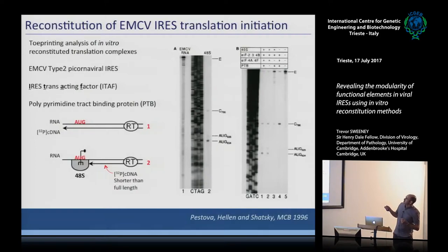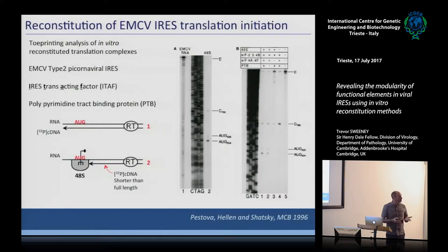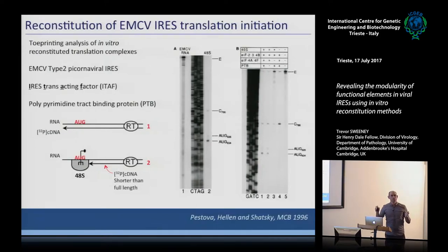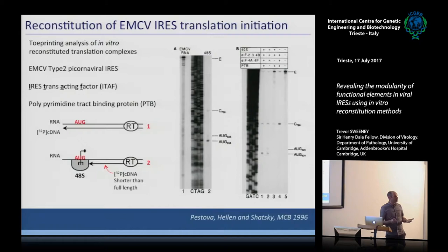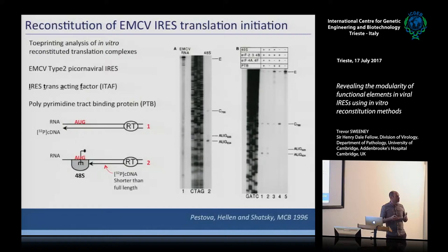When we omit EIF4F we don't see any complex, and omitting other factors also abolishes complex formation, showing that this set of proteins is required for 48S complex assembly. This was quite novel at the time because many thought these IRESs wouldn't use the same translation factors as cap-dependent translation. But this clearly demonstrated that the canonical set of translation factors was sufficient for these IRESs to work, with additional stimulation from PTB.